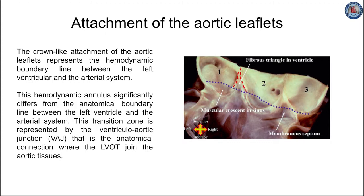The basal attachment of the aortic leaflet describes three semilunar lines with a characteristic crown-like fashion. These semilunar lines represent the hemodynamic boundary line between the left ventricular outflow tract and the arterial system. Every single semilunar line has a nadir, which overlaps the left ventricular outflow tract in its most distal portion, and at the zenith, they rise and join the sinotubular junction, representing its upper attachment.